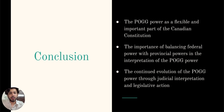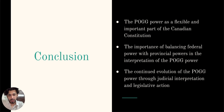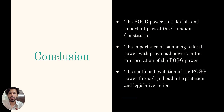The peace, order, and good government power has been a flexible and important power of the Canadian Constitution since its inception. It has allowed the federal government to legislate on matters of national concern or that require a response to an emergency. However, it is important to balance federal power with provincial powers in the interpretation of POG powers to ensure proper distribution of power between the two levels of government. Over the years, the POG power has evolved through judicial interpretation and legislative actions, with the Supreme Court of Canada playing a key role in interpreting its scope and limitations.